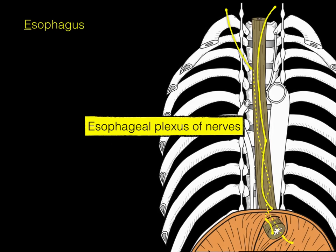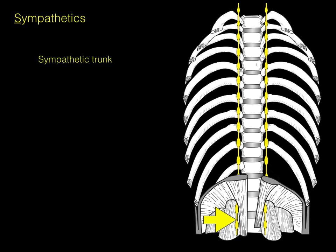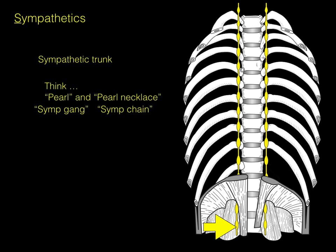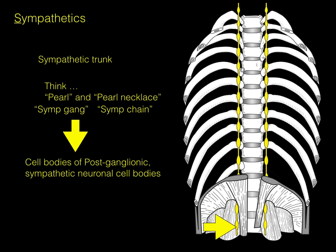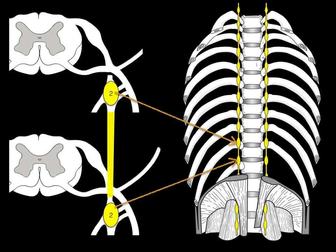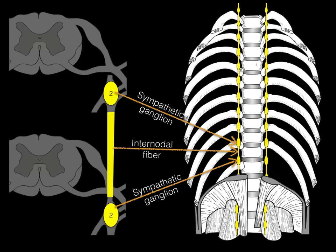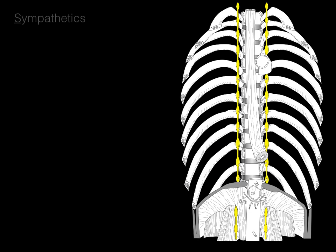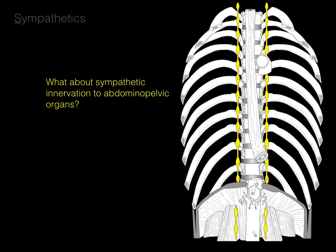Now let's talk about sympathetics. The sympathetic trunk runs along the paravertebral region. Think of a pearl necklace: each pearl is a sympathetic ganglion containing post-ganglionic sympathetic neuronal cell bodies, and the necklace is the sympathetic chain. Their information is destined for sweat glands in the skin, as well as structures in the head, neck, heart, and lungs. Internodal fibers connect the ganglia, and together they form the sympathetic chain.